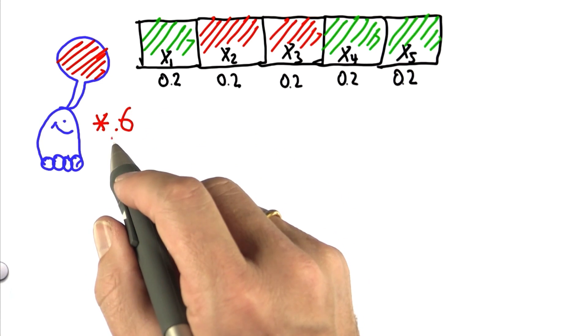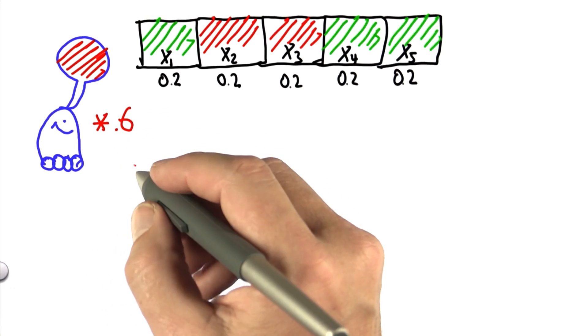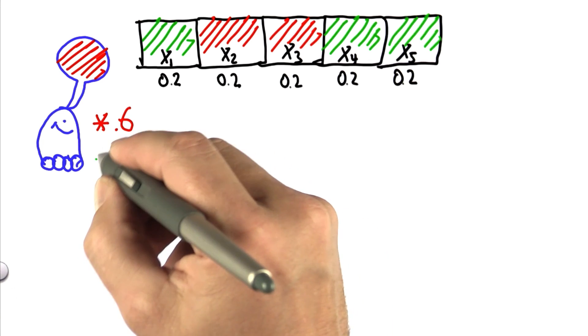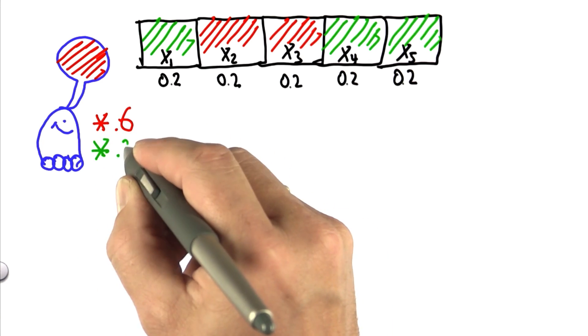That feels small, but as we'll see later, it's actually a large number. Whereas all the green cells will be multiplied with 0.2.